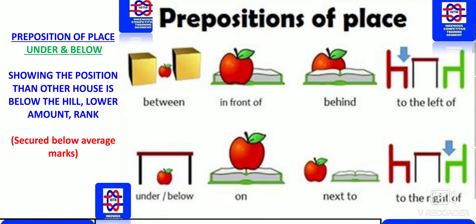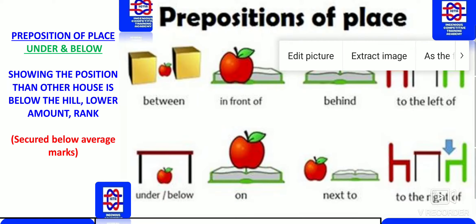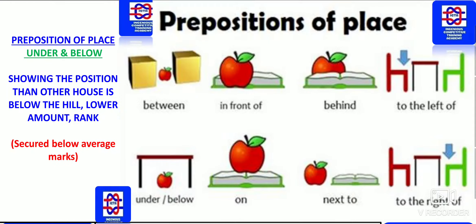Next we have preposition of place: under and below. Showing position lower than something else: the house is below the hill. Lower amount or rank: he secured below average marks. So under and below are used to show position lower than another, or lower amount or rank.